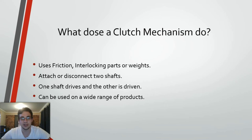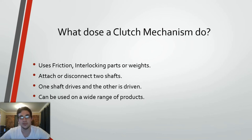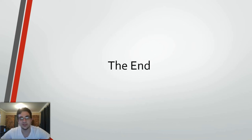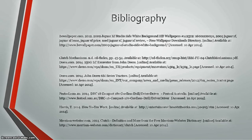What does a clutch mechanism do? It uses friction, interlocking parts or weights to attach or disconnect two shafts. One shaft drives and the other is driven. It can be used in a wide variety of products from cars to yo-yos. Thank you for listening to this presentation. If you have any questions, feel free to comment. Until next time, this is Ben.